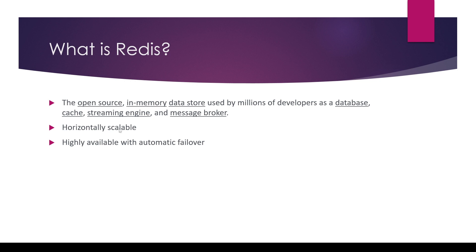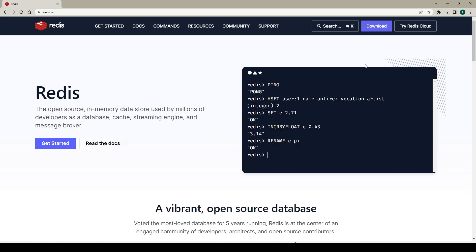Redis is horizontally scalable, meaning we can add more machines to get a more powerful Redis cluster. Redis is also highly available with automatic failover — if the primary goes down for whatever reason, it can automatically bring another primary up. Talking about use cases, we can use Redis as a database, and we can also use it as a cache. In fact, this is the most common use case of Redis. It can also be used as a streaming engine and a message broker.